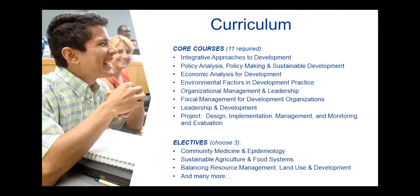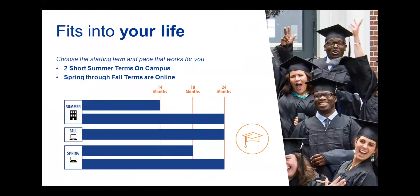Moving on to the electives — there's a range of them, including community medicine, sustainable agriculture, community development finance, negotiations, and housing. You need to choose three. In terms of program structure, you can take it in as little as 14 months or spread it out to 24 months, depending on how many courses you can take during the spring and fall terms at your workplace. The cost is the same whether you do it in 14 or 24 months — it's simply spread out over that period of time.